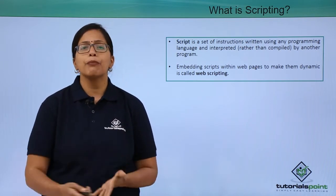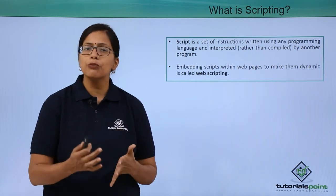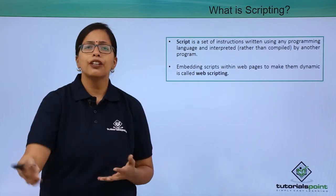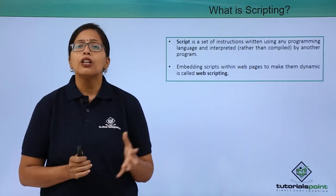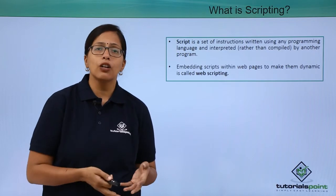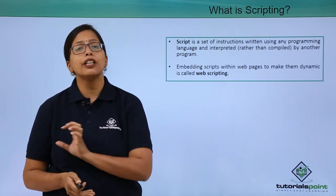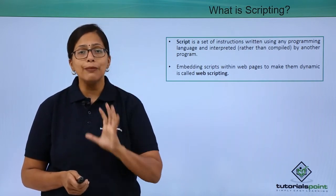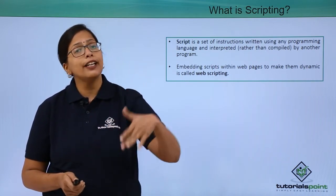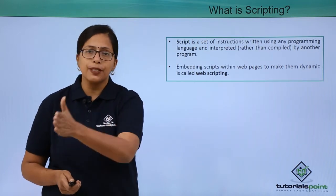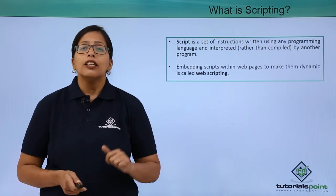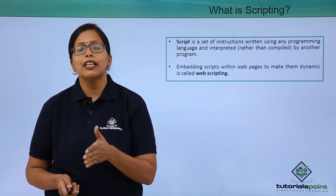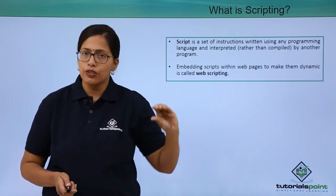Now, suppose you want to make the page more interactive. For example, you want to put in a poll where users can give their ideas or opinions, or you want to have a chart, pie chart, or bar graph that varies according to the number of visitors clicking on a certain page. These are elements that cannot be decided beforehand when the web page is being made — they are decided only when the user visits.